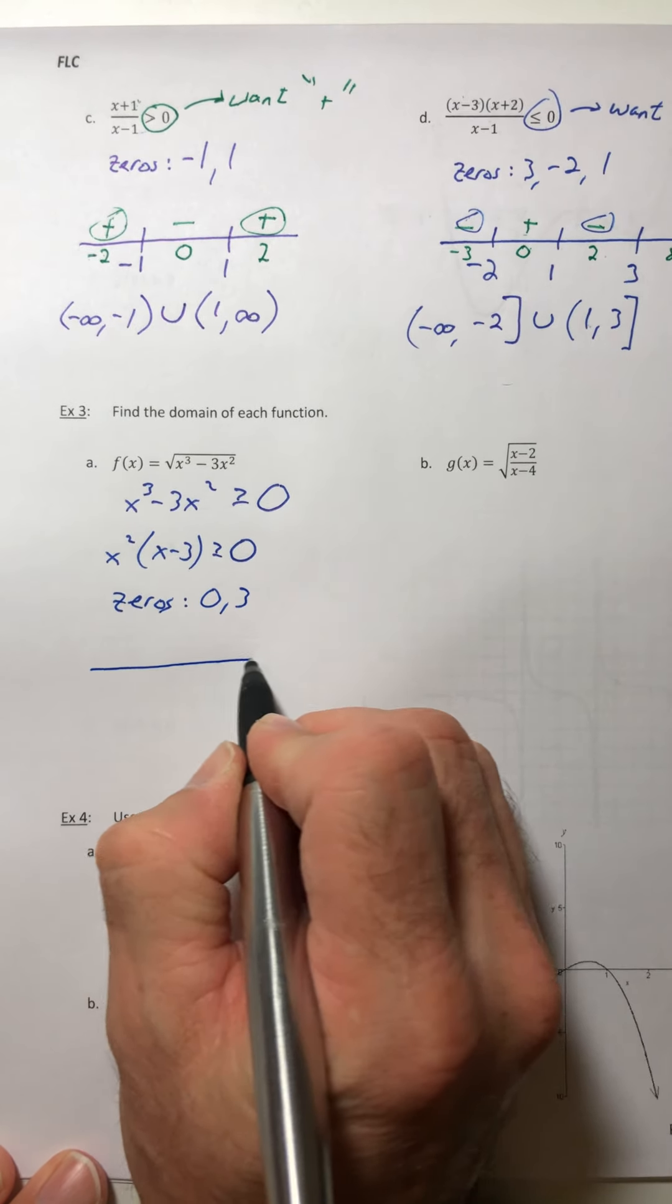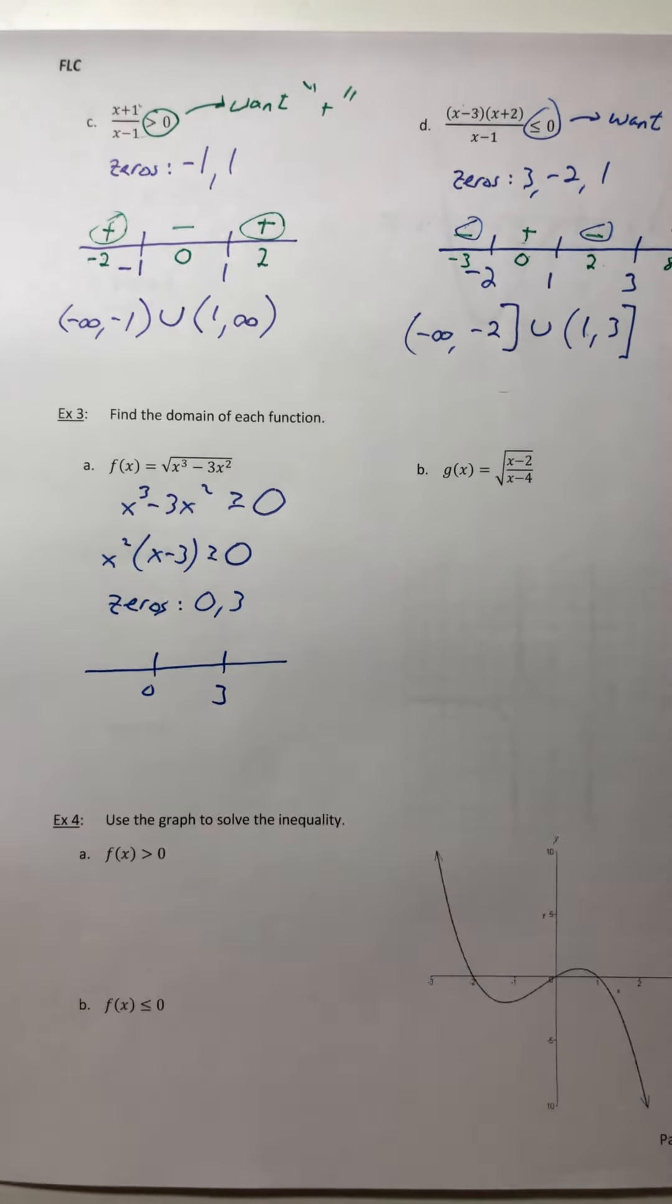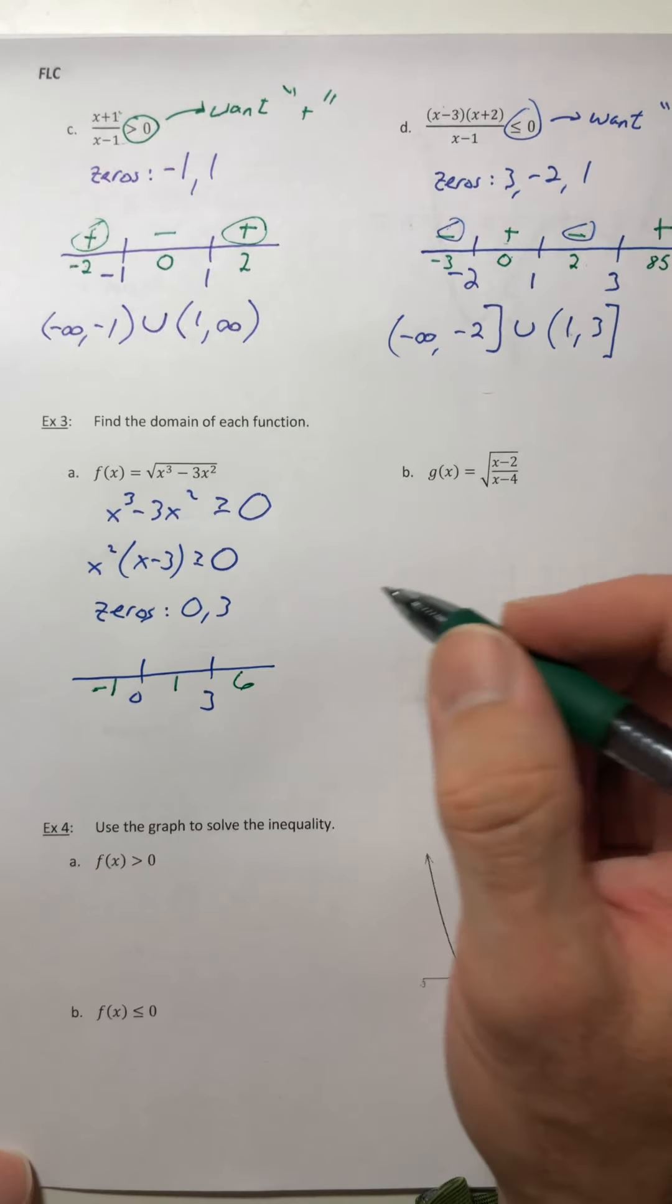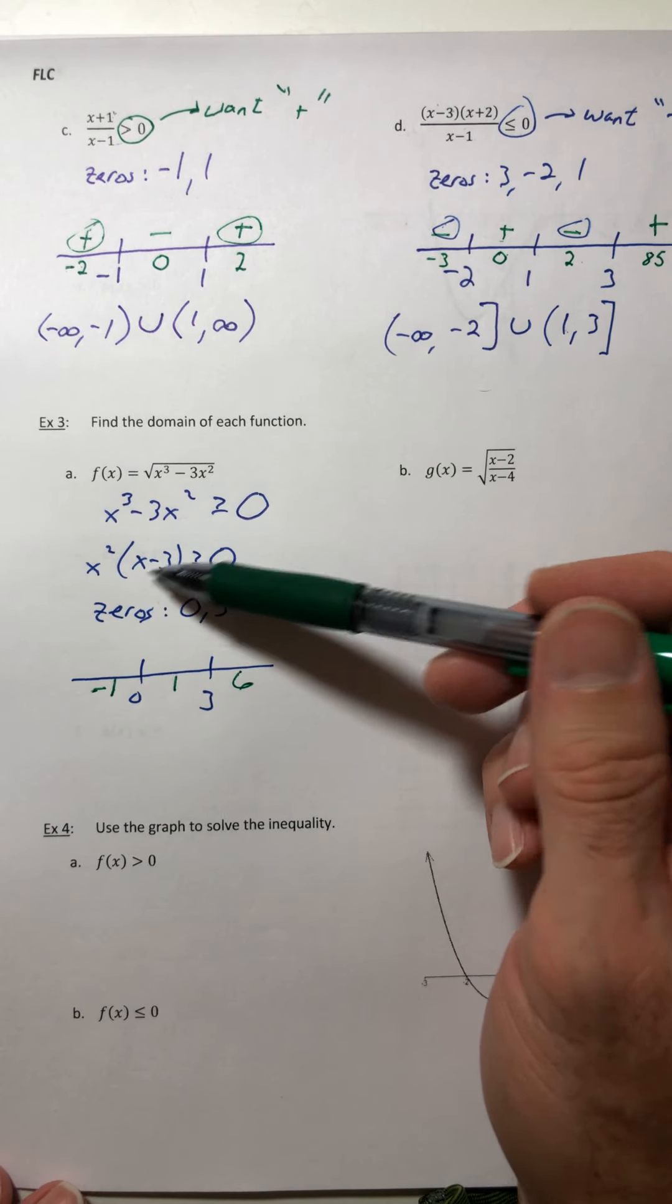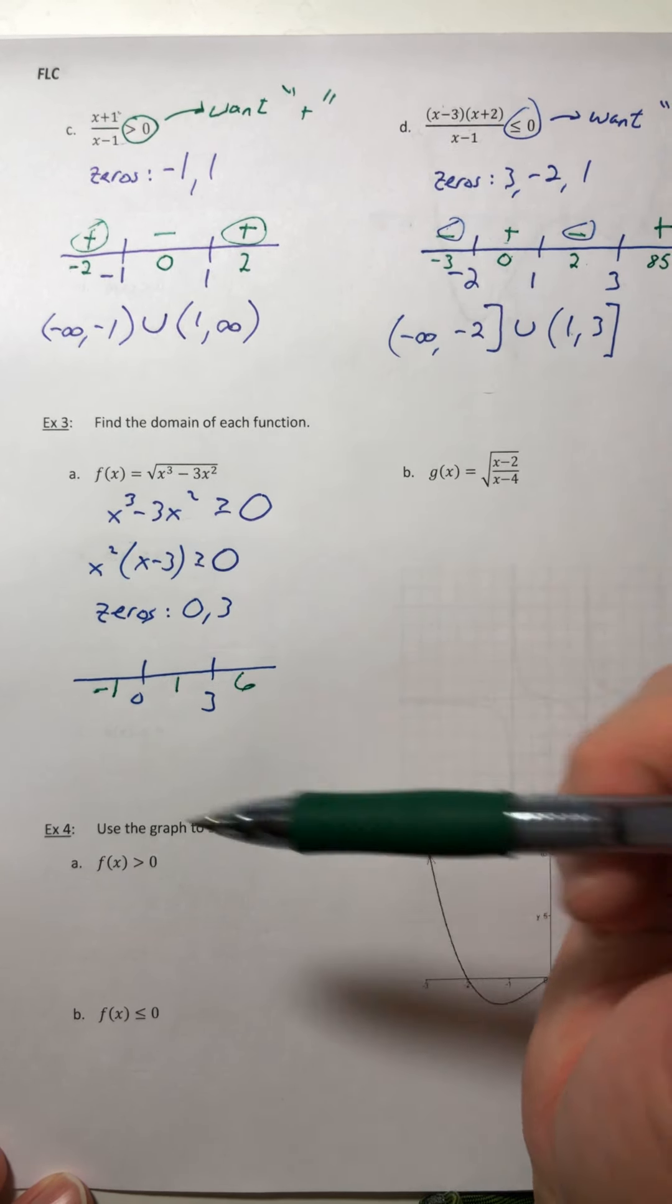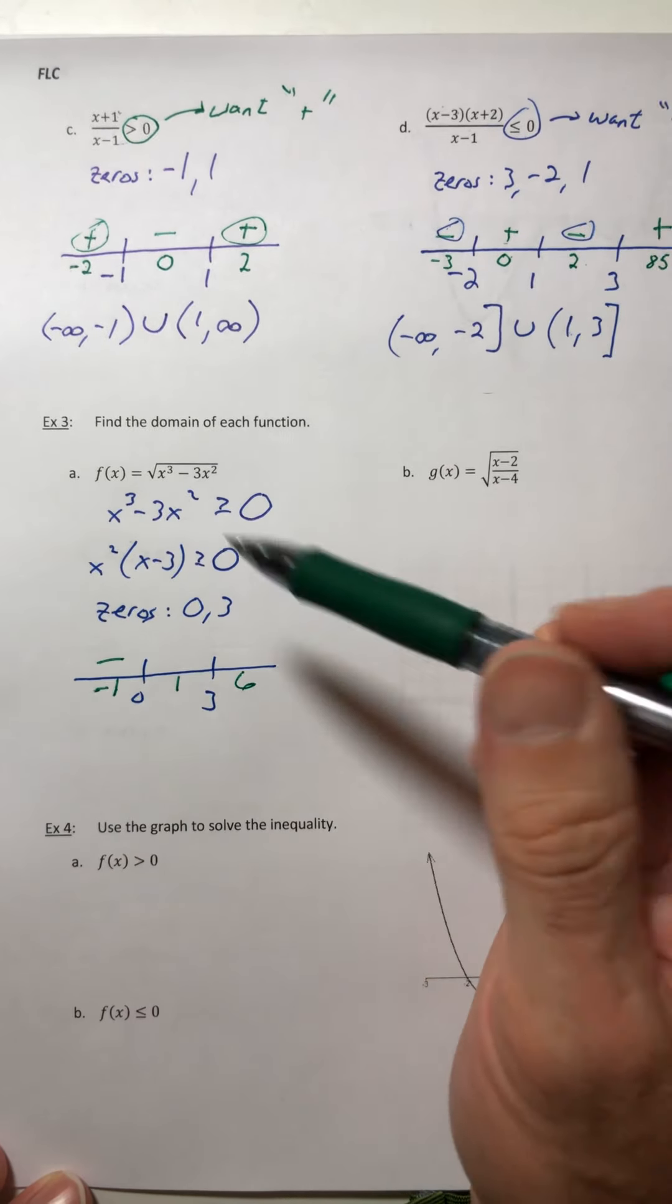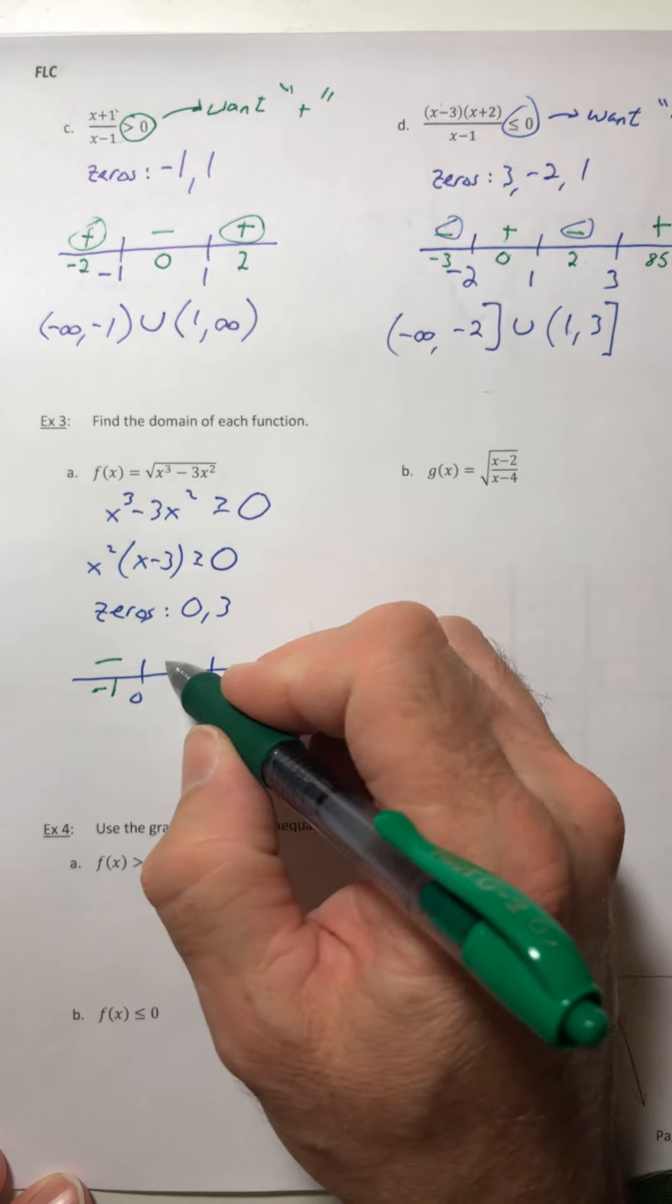So you can set up your number line and now you can test them. So let's go with negative 1, 1, and 6. So again plug them back into your inequality and you can plug them into the original or the factored. The factored one is usually faster. So if I plug in that negative 1, it's a positive and a negative. So a minus.